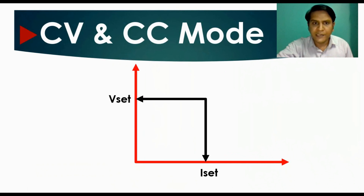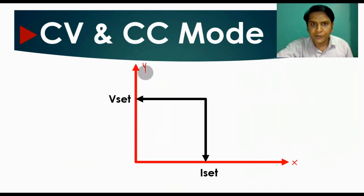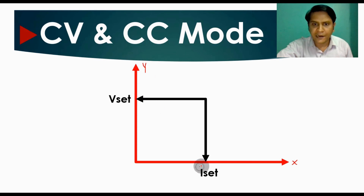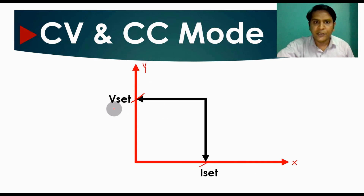You can see here there are two planes — the X plane and the Y plane. Using these two planes, I will try to explain CV mode and CC mode. CV stands for constant voltage and CC stands for constant current. In the X axis there is a current limit which is called I-set, and in the Y axis there is a voltage limit which is called V-set.